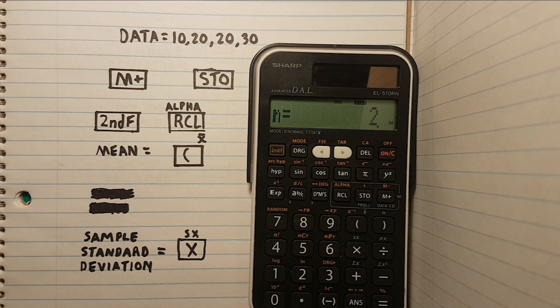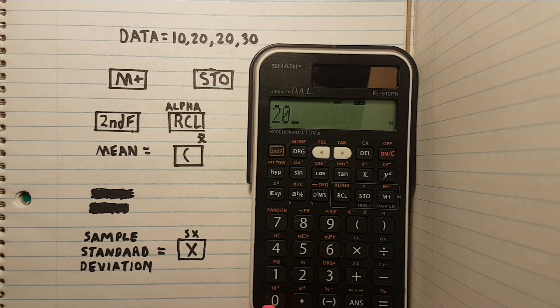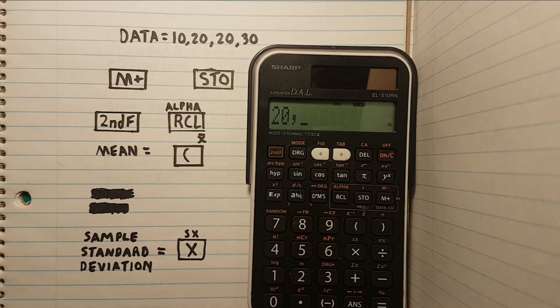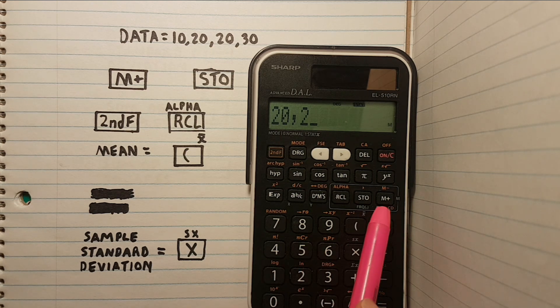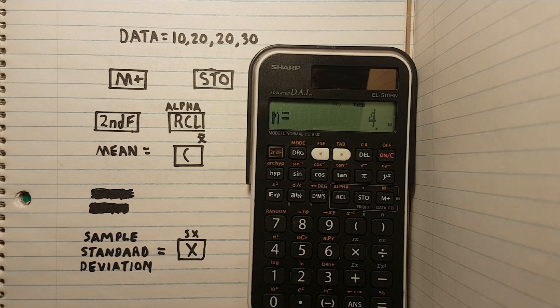We can see we have two 20s, so if we hit 20, store, we now see a comma behind our measurement. This is asking how many copies of this number do we want to use. Since we have two measurements, we'll press 2 and then hit the M plus key. We now see we have a total of four measurements in our data set.